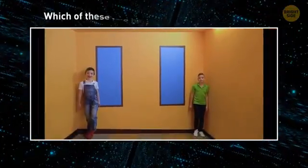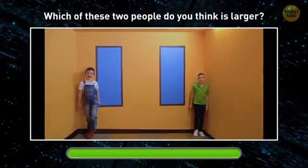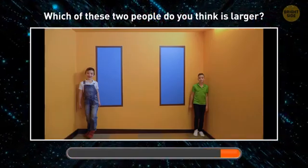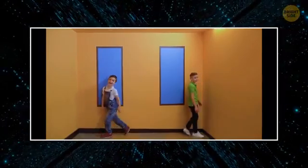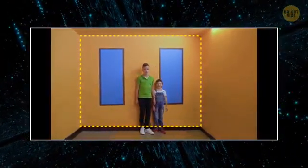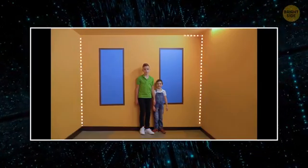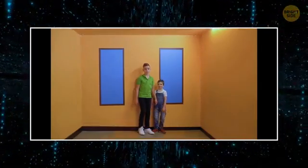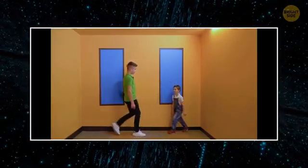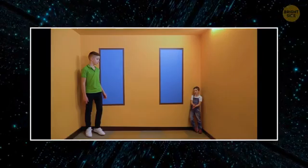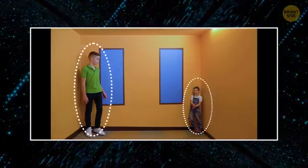Welcome to Ames room. Nothing is impossible here. Which of these two people do you think is larger? An Ames room only seems to be a normal rectangular construction. It has slanted walls and an inclining ceiling and floor. The right corner is closer to you than the left corner. Your brain is used to rectangular rooms, so it corrects the image for you. The room seems normal, and the people inside seem weird.